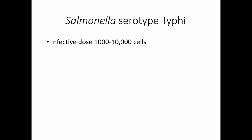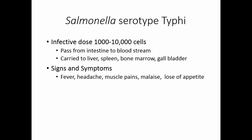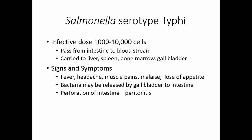The Salmonella serotypes typhi and paratyphi have an infective dose of 1,000 to 10,000 cells. They pass from the intestine to the bloodstream, carried to the liver, spleen, bone marrow, and gallbladder. Signs and symptoms of typhoid fever include fever, headache, muscle pains, malaise, and loss of appetite. Bacteria released from the gallbladder to the intestine may cause perforation, resulting in peritonitis. Typhoid fever may last four weeks, and without treatment 12 to 30 percent of cases are fatal.